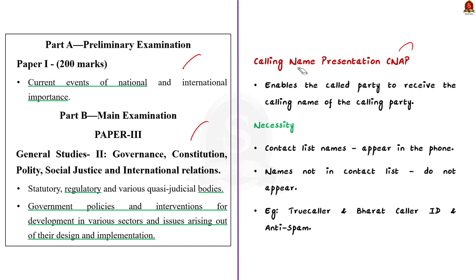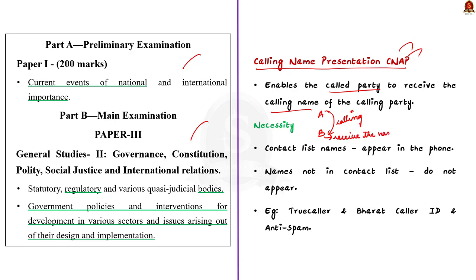The calling name presentation, shortly known as CNAP, is a supplementary service which enables the called party to receive the calling name information of the calling party. For example, if A is calling B, B will receive the name of A on his mobile phone. Currently, names appearing on mobile phones are only from numbers saved in the contact list. If a number is not stored, we won't get the name. CNAP is similar to TrueCaller and BharatCallerID — we will get to know the name of the calling party.